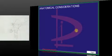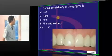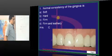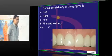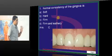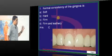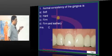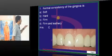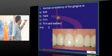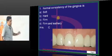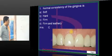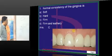Coming to anatomical considerations: the normal consistency of the gingiva is firm and resilient. Whenever there is inflammation or edema, this firmness changes to edematous consistency. Whenever fibrosis takes place, it goes to leathery consistency. The answer for normal gingival consistency is always firm and resilient.